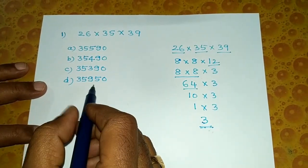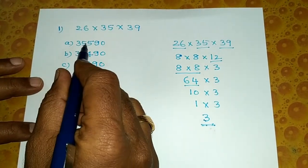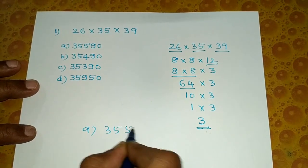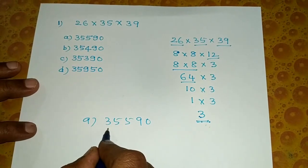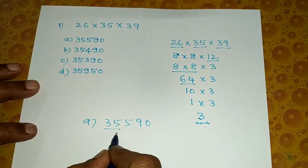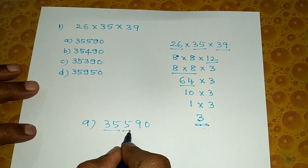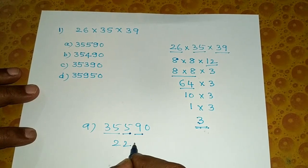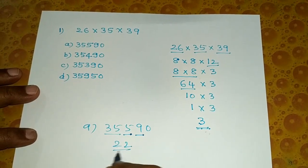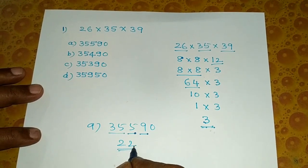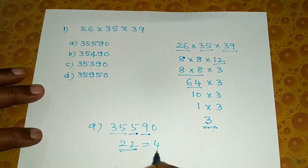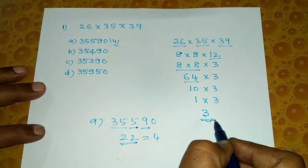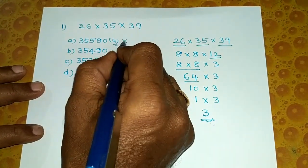Now let's see option A: 3, 5, 5, 9. Add 3 plus 5 equals 8, plus 5 equals 13, plus 9 equals 22. Then 2 plus 2 equals 4. This answer is 4. This is not equal to 3, so the correct answer is not A.